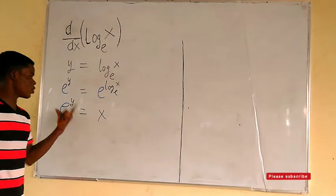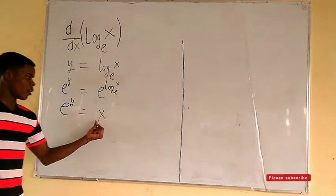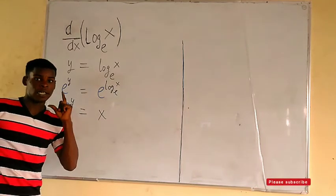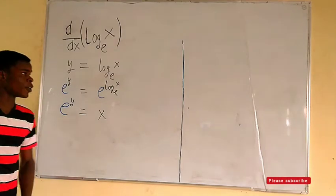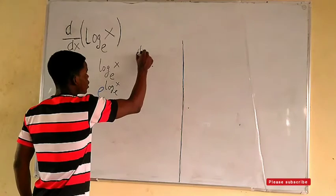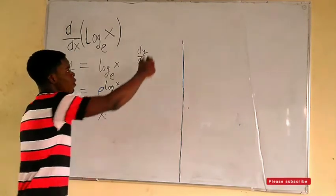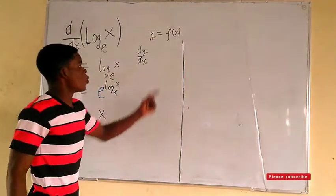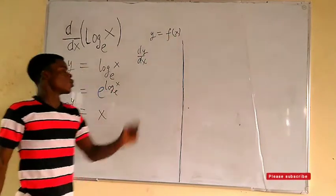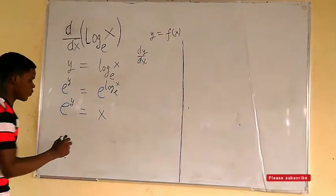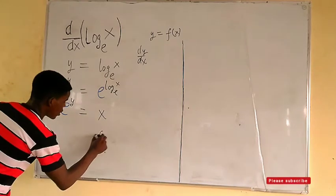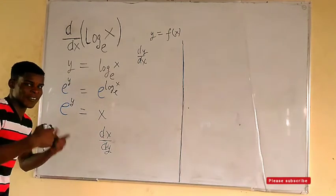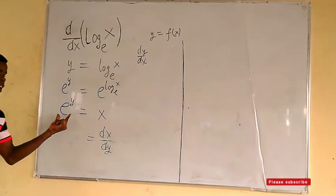Now we have e to the y equals x. This is a function of y, where x is the dependent variable and y is the independent variable. When we differentiate x with respect to y, we get dx/dy, which is the multiplicative inverse of what we are actually looking for — that is, dy/dx.